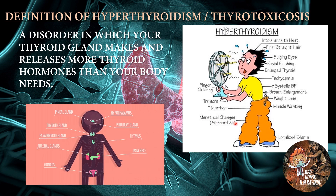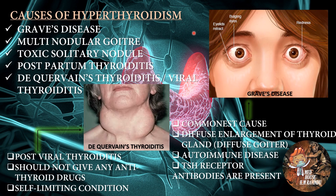In this picture you can see the clinical features of hyperthyroidism. The most common clinical features are intolerance to heat, bulging eyes, enlarged thyroid gland, weight loss, localized edema, and tremors. Later we will talk in detail about clinical features. Causes of hyperthyroidism are Graves' disease, multinodular goiter, toxic solitary nodule, postpartum thyroiditis, de Quervain's thyroiditis, or viral thyroiditis.